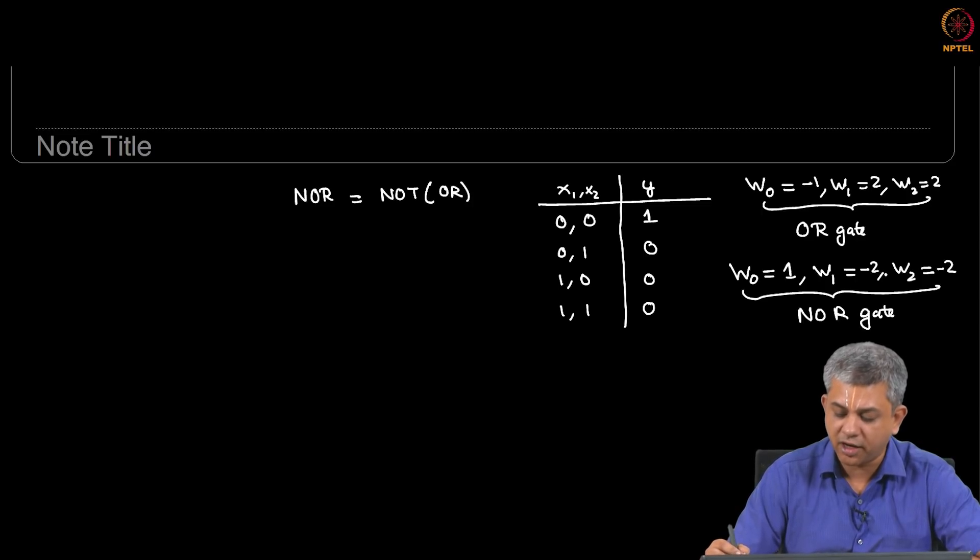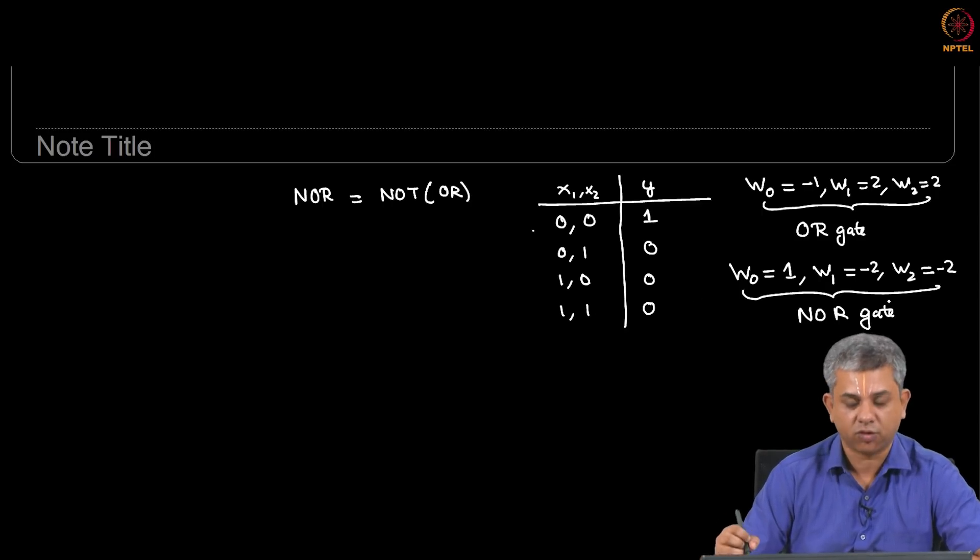You can check this quickly. If you do W0 which is 1 plus W1 X1 plus W2 X2, the value will come out to be positive, therefore Y after classification will come out to 1. Similarly in this case W0 plus W1 X1 plus W2 X2 will be minus 1, so this will be 0. In this case you will get minus 4 or minus 3 and you will get 0 again. So this works out.